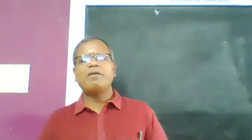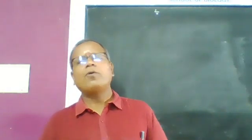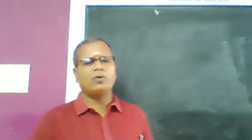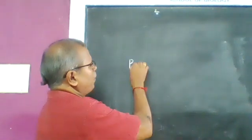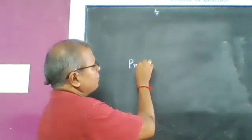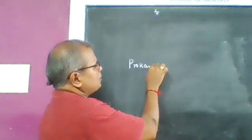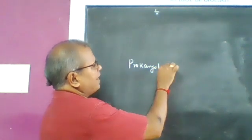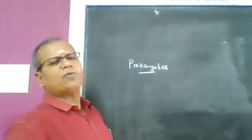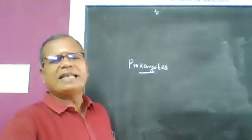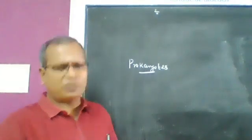Today I would like to give a brief idea regarding prokaryotic and eukaryotic cells. 'Pro' means primitive and 'karyon' means nucleus. An organism with a primitive or incipient nucleus is said to be a prokaryote.